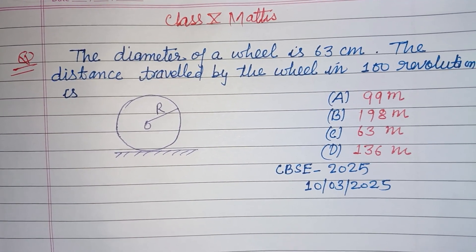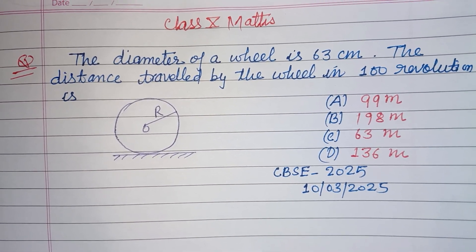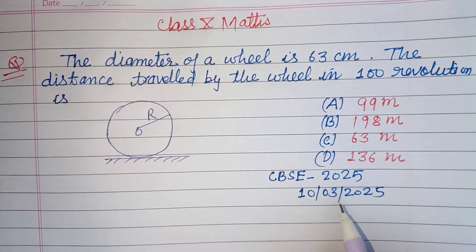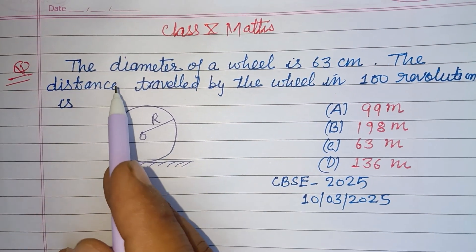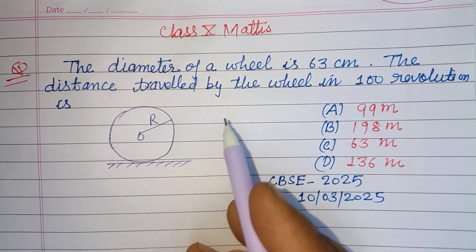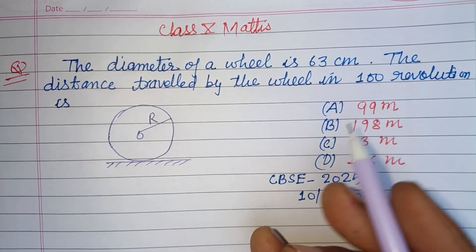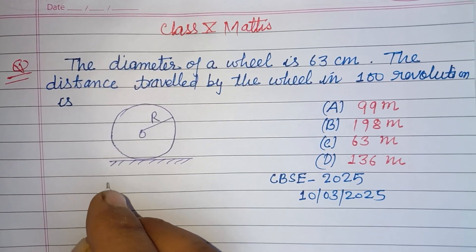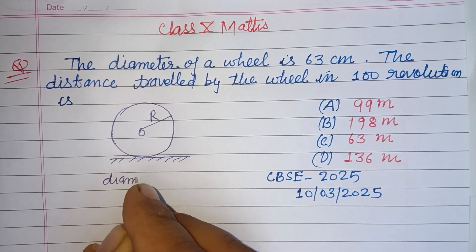Hello viewers, warm welcome to this YouTube channel. Question from CBSE Board 2025, Class 10: The diameter of a wheel is 63 centimeters. The distance traveled by the wheel in 100 revolutions is? So students, diameter of the wheel is given which is 63 centimeters.